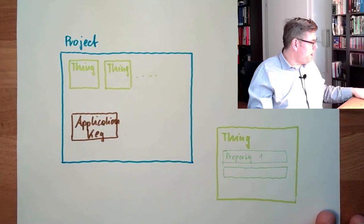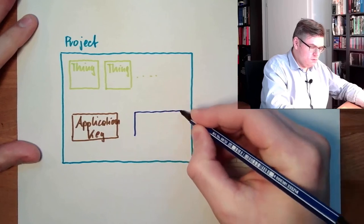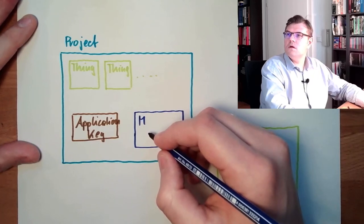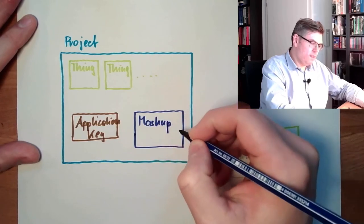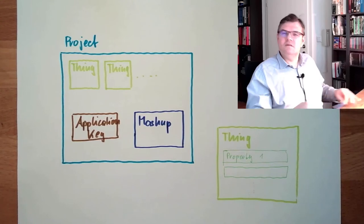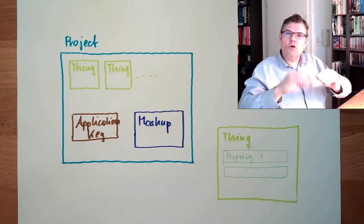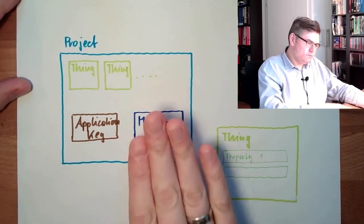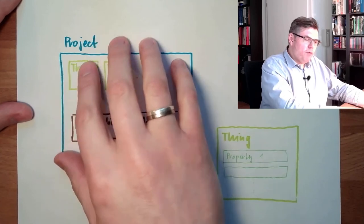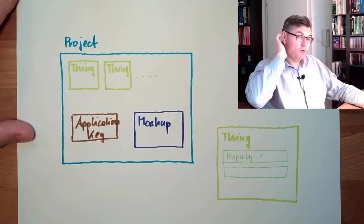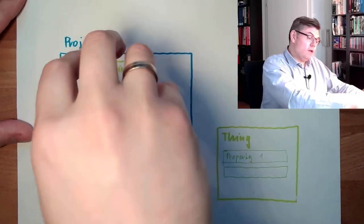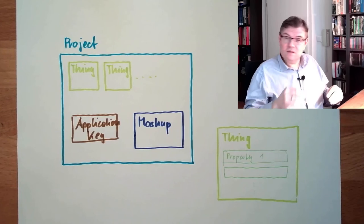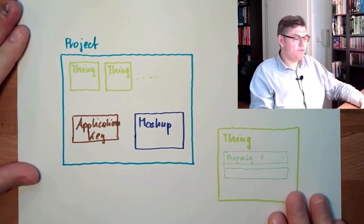A thing which is also held by the project are the so-called mashups. Mashups are web pages containing gauges, trend curves, and so on, displaying data of the things. All those parts of a project can be handled within the ThingWorx Composer. We can do projects, add things, add application keys, add mashups, and we can even add data storage for historical data. It's all part of the project.